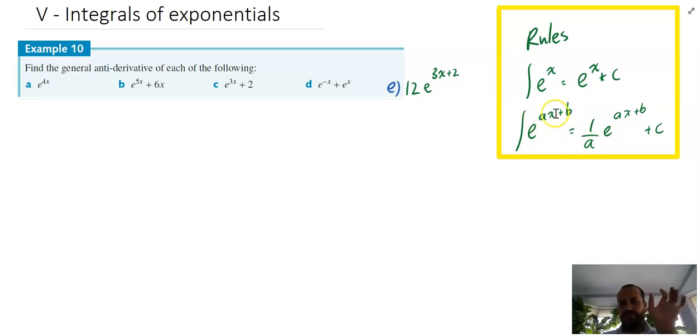And that should start feeling fairly familiar now. When we get this ax plus b scenario instead of the x, we can do 1 over a as our integral or part of our integral. Alright, that's enough of that. Let's just do five questions.